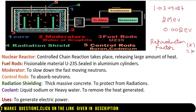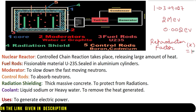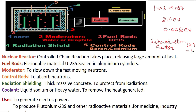The water absorbs that heat, gets converted into steam — that is, gas. This gas goes inside the turbine, rotates the turbine, and by the process of electromagnetic induction, a current is generated in the generator. After rotating the turbine, the gas enters into the condenser. It is important to note that there are different ways of generating electricity — using a hydroelectric power station, windmills, or a nuclear reactor.